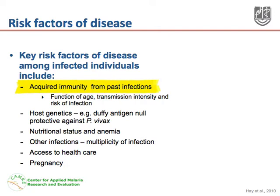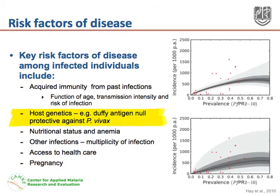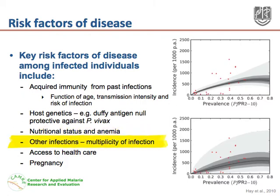Key risk factors of disease among infected individuals include acquired immunity from past infections, which is primarily a function of age, transmission intensity, and the risk of infection. Host genetics such as the Duffy antigen null, which is protective against Plasmodium vivax, nutritional status and anemia, other infections or multiplicity of infection, access to healthcare, and pregnancy. It should be noted that women in their first two pregnancies in areas of stable Plasmodium falciparum transmission are at increased risk of malaria.